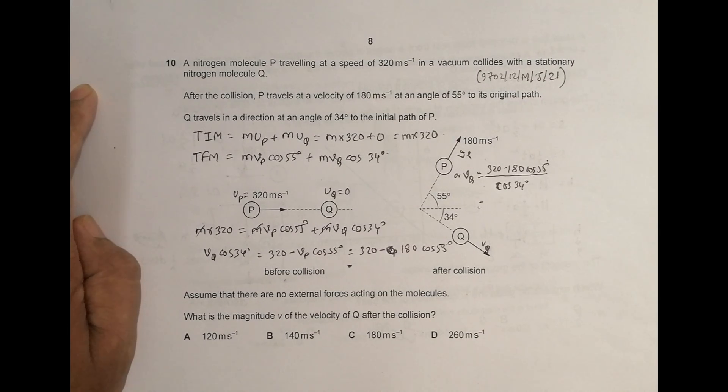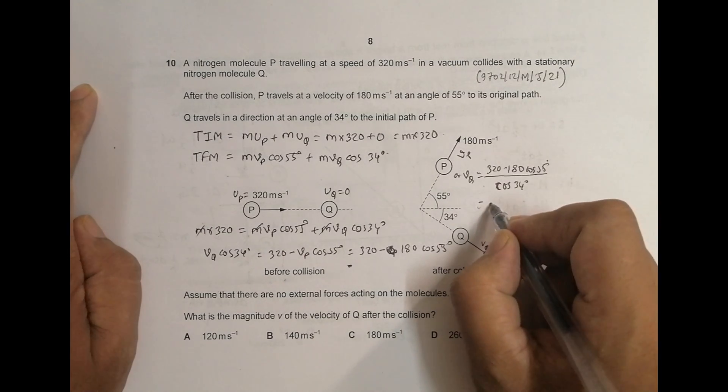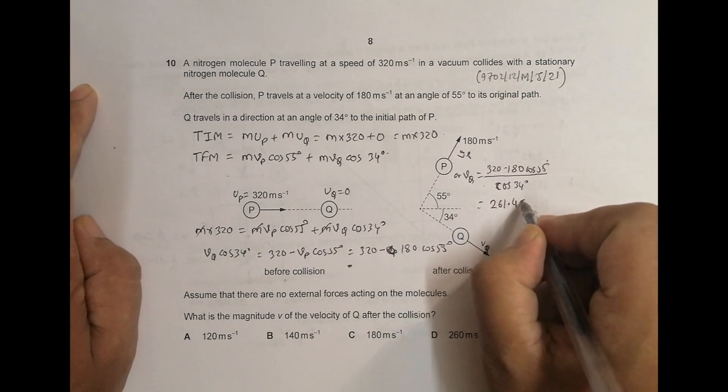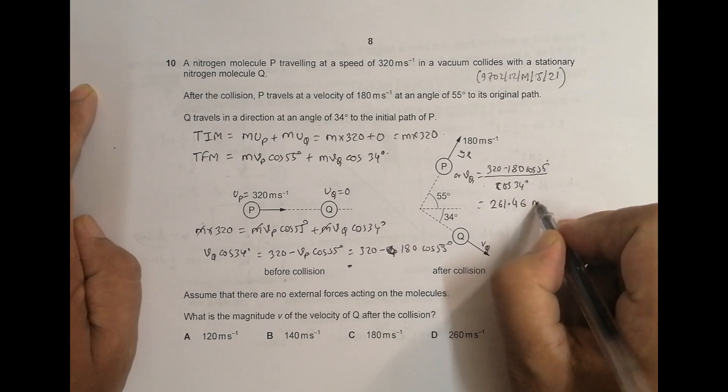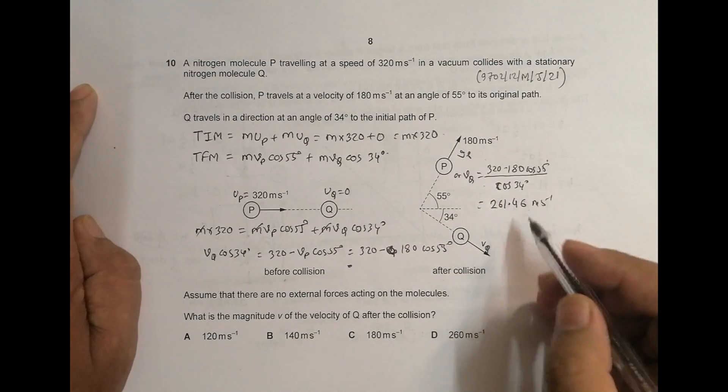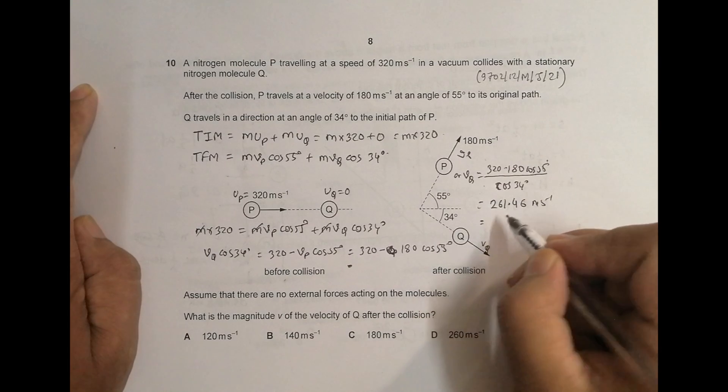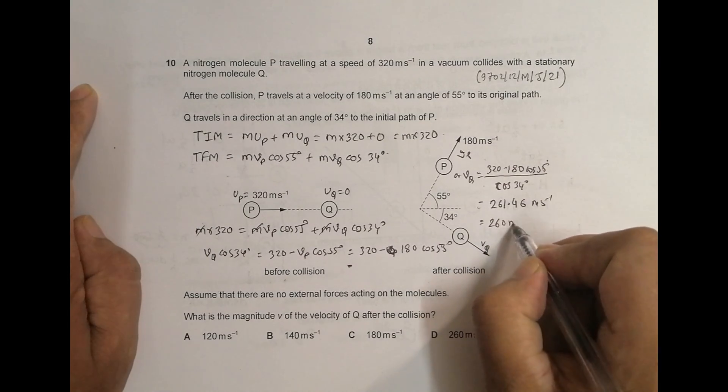So I am doing, yes, so this has given me 261.46 meter per second. So when I write it in two significant figures, it becomes 260 meter per second,